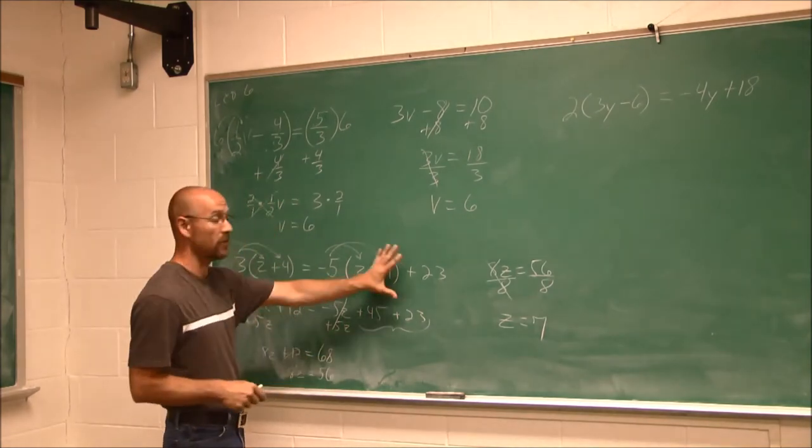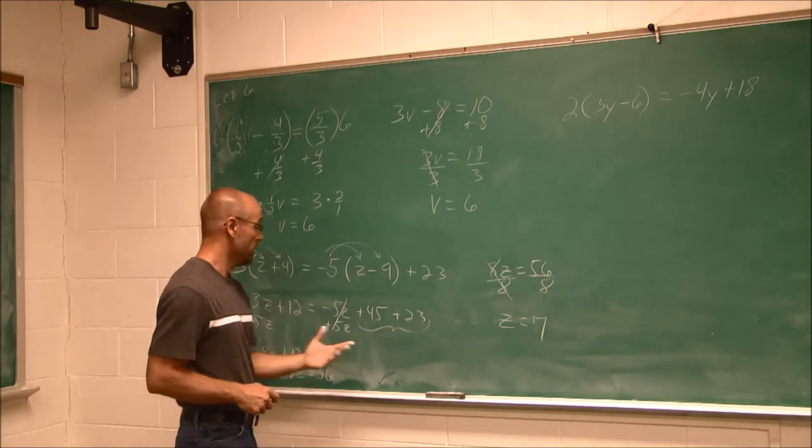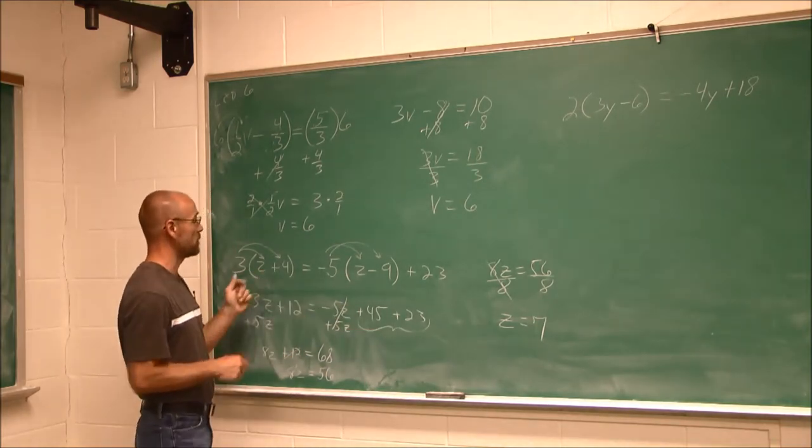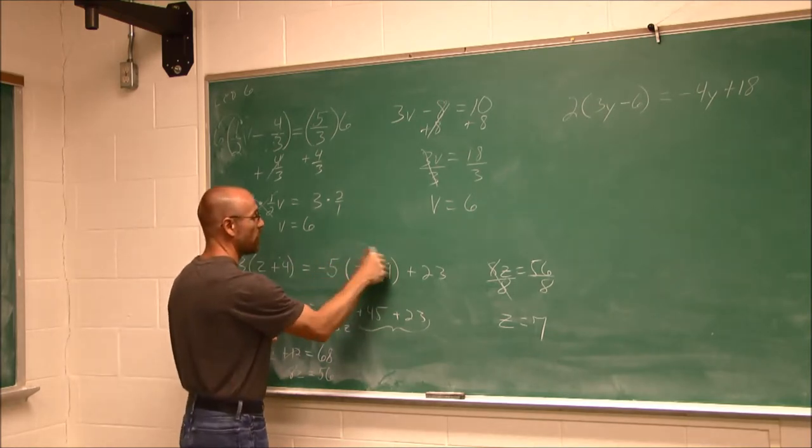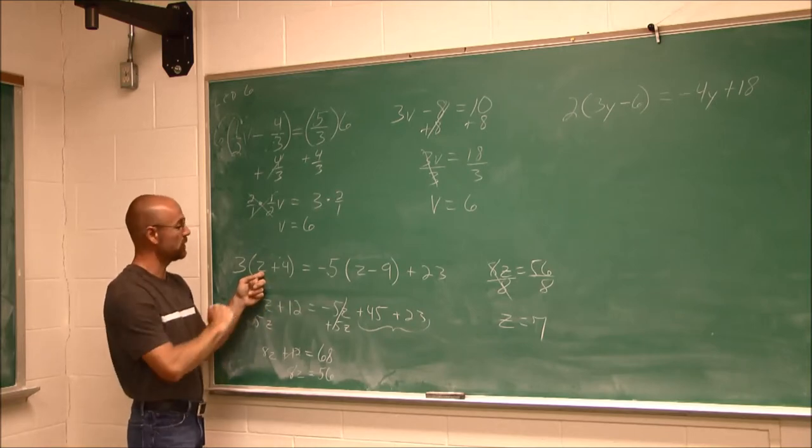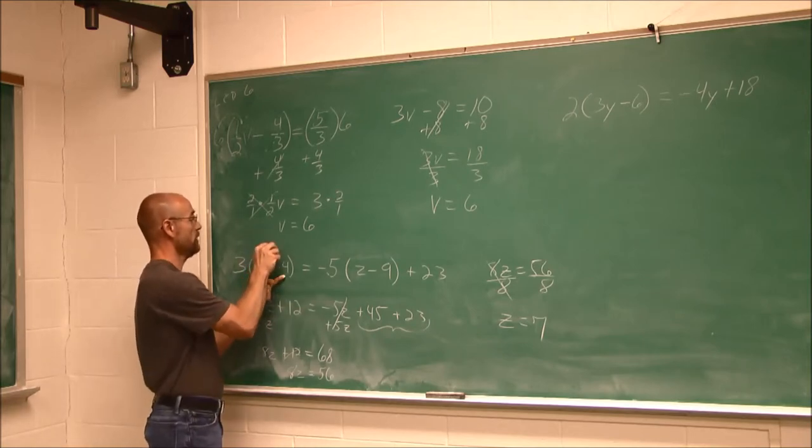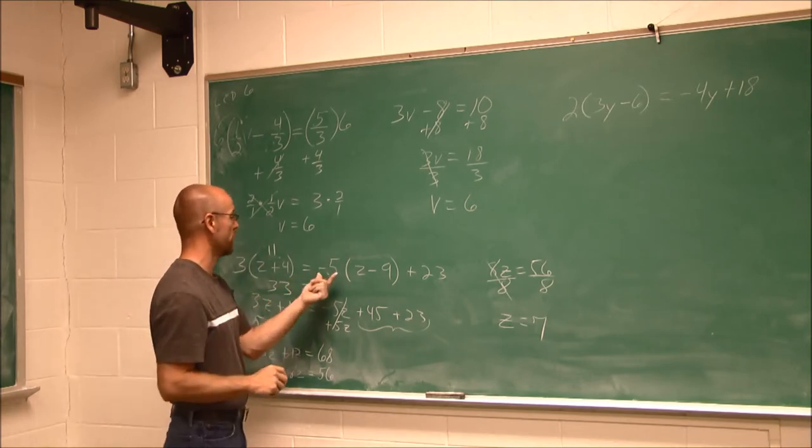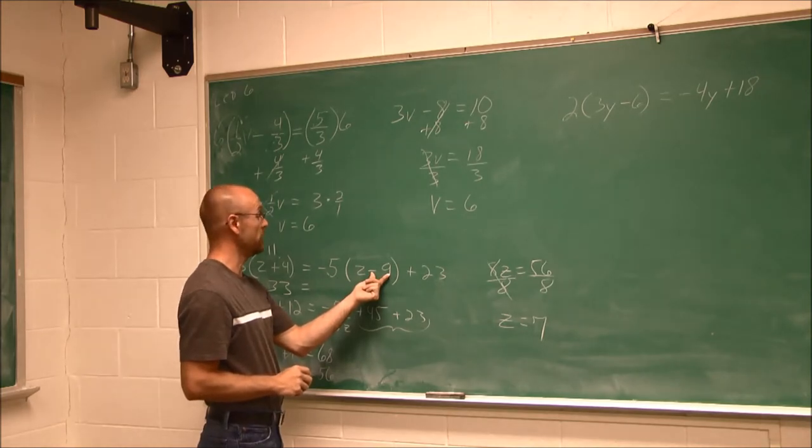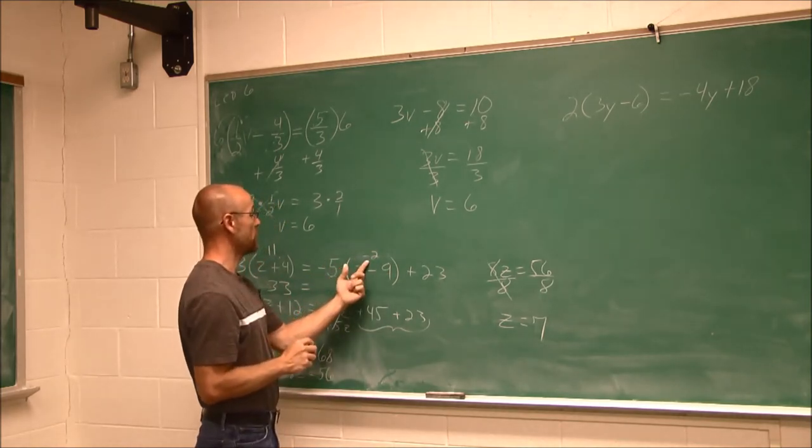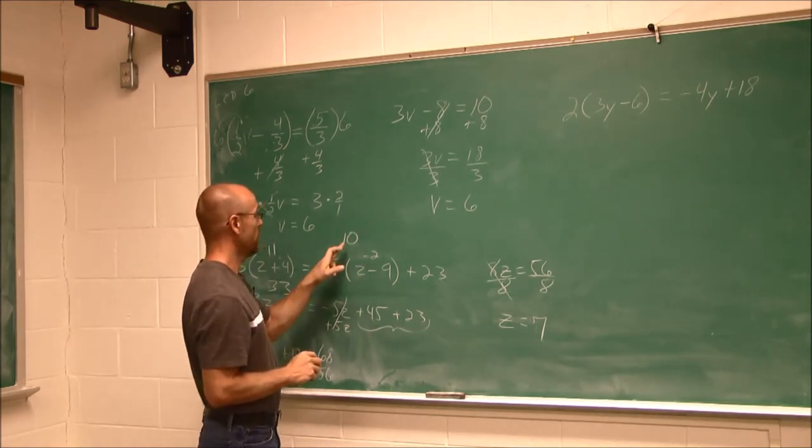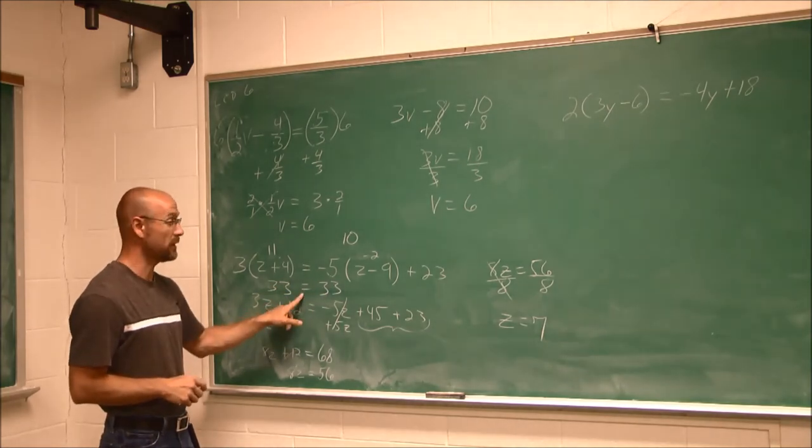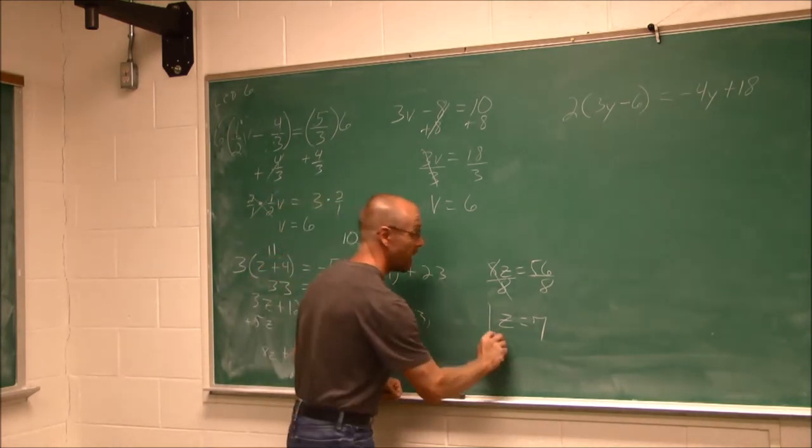I need to check my work. There was a lot of processes involved here to come to that conclusion. It's very common that we might make a sign error, or we might combine the wrong terms. So let's make sure that's a true statement. So I'm going to go back to the original problem. And I'm going to check my work, because I want to know that I'm right. So if I put 7 in here, that's the solution I found. 7 plus 4 is 11. 3 times 11 is 33. So this side of the equation is 33. Let's see what we get over here. If I put 7 in here, 7 minus 9 is negative 2. Negative 5 times negative 2. A negative times a negative is a positive. 10. 5 times 2 is 10. 10 plus 23 is 33. That is a true statement. 33 is 33. If I get this true statement, it is what it is. This is the answer. I am correct.